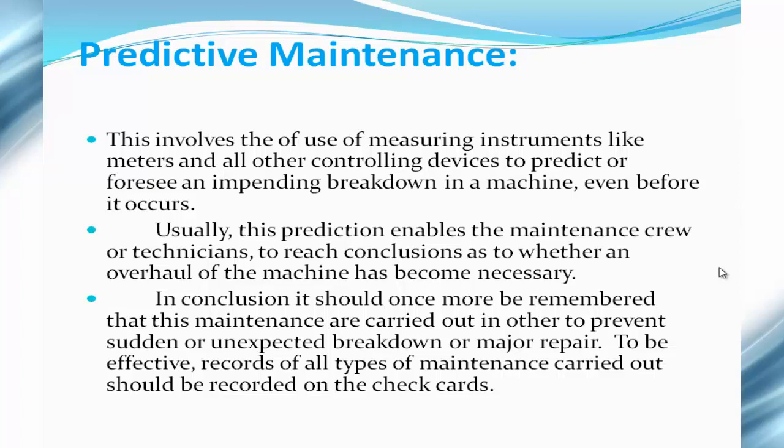For predictive maintenance, just as the name implies, this is concerned with efforts of predicting whether a fault is pending. It involves the use of measuring instruments like meters and other controlling devices to predict or foresee an impending breakdown in a machine even before it occurs. This prediction enables the maintenance crew or technicians to reach a conclusion as to whether an overhaul of the machine has become necessary. These maintenance types are carried out to prevent sudden or unexpected breakdown or major repairs, and records should be kept on check cards.